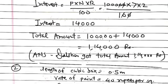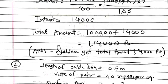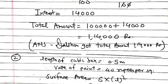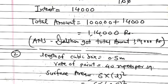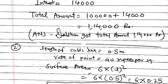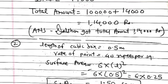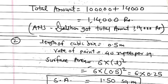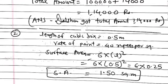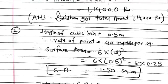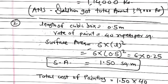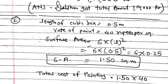Second question: the length of a cubic box is 0.5 meter and the rate of painting is 40 rupees per square meter. Surface area equals 6 into length squared: 6 into 0.5 squared equals 6 into 0.25, which gives a surface area of 1.50 square meters. Total cost of painting equals 1.50 into 40 equals 60 rupees. Total cost of painting is 60 rupees.